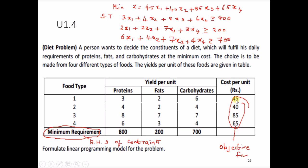We can frame the objective function as 45x1 plus 40x2 plus 85x3 plus 65x4. The constraints are: 3x1 plus 4x2 plus 8x3 plus 6x4, which is greater than or equal to 800, because we are dealing with a minimization problem. Similarly, 2x1 plus 2x2 plus 7x3 plus 3x4, which is greater than or equal to 200.